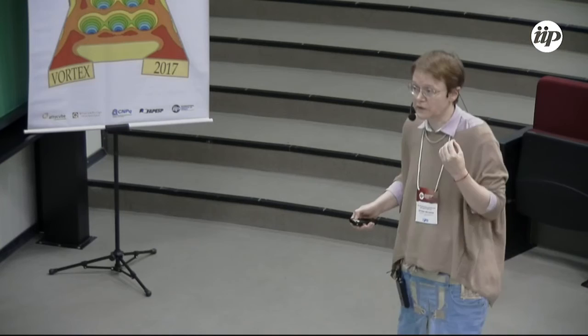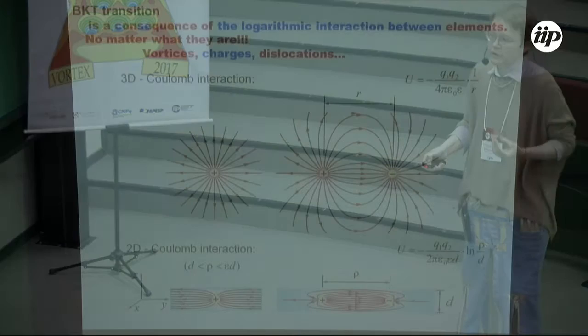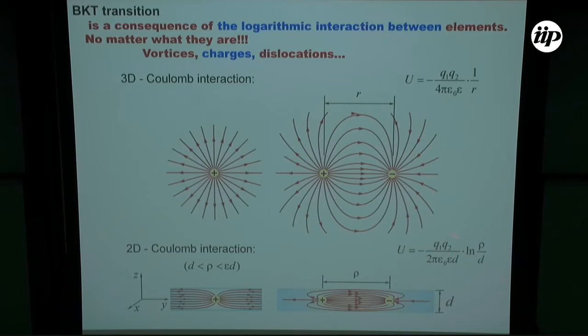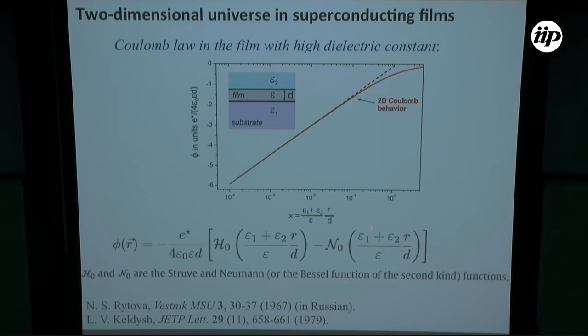Indeed, what does it mean two-dimensional Coulomb interaction? We know that in thin film, the two charges will interact logarithmically on distances less than, as a simple approximation, dielectric constant multiplied by the thickness of the film. So in order to have a reasonably large spatial scale, we need to have a reasonably large dielectric constant in the system. This is exact calculations, and what we see, it is, oh my god, 50 years ago. All these calculations about logarithmic interaction, one film with dielectric constant epsilon immersed between two half-spaces.